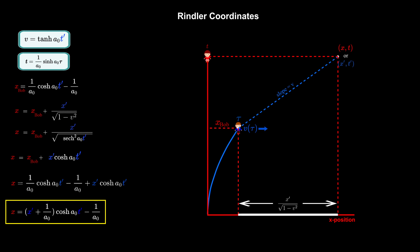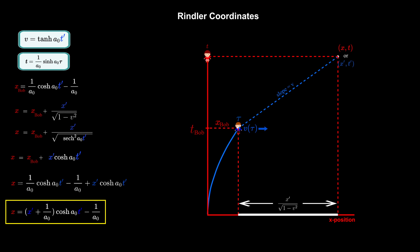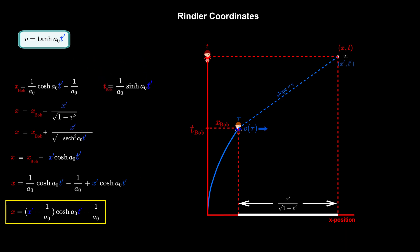We can find Alice's time coordinate as a function of Bob's coordinates in a similar fashion. Let's start with Bob's location in time on the diagram according to Alice, and call it t-Bob. This location is given by the time equation. As before, we rewrite the time coordinate to be t' instead of tau in the equation, because it is customary to use t' instead of tau when referring to events that are not taking place at Bob's location in space-time. To find the remainder of the time t up to the event, we extend a horizontal dotted line from Bob's position to the event's location in space.